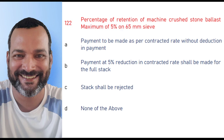When the percentage retention of machine crushed stone ballast is a maximum of 5% on the 65 mm sieve, payment is to be made as per the contractor rate without any deduction.